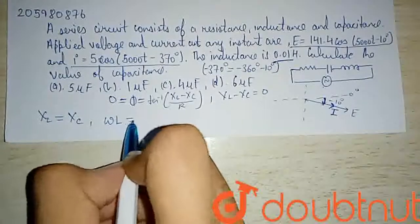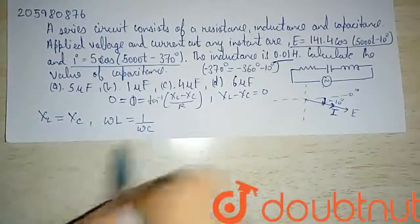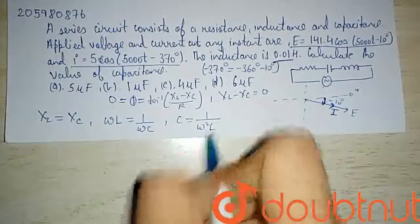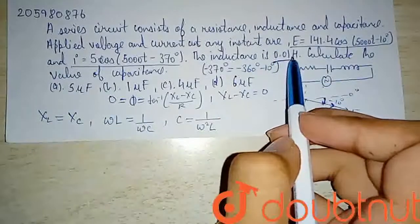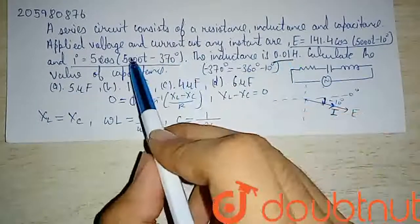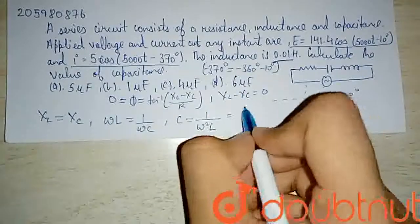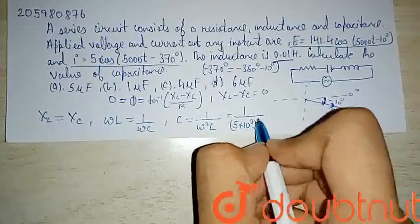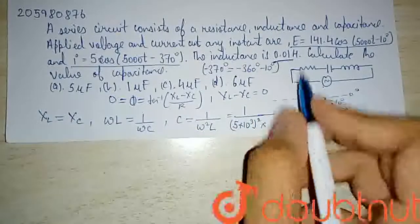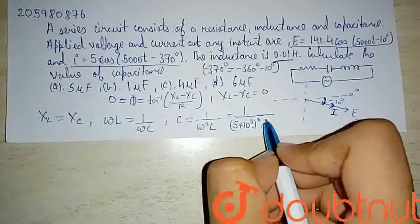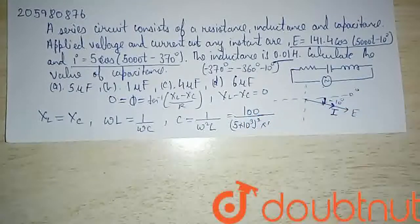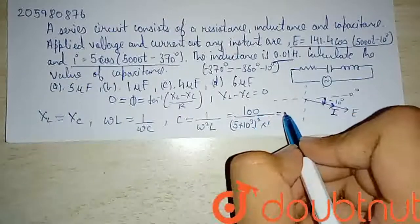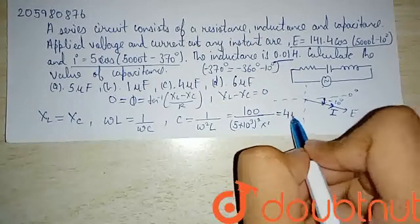XL minus XC by R: omega L minus 1 by omega C equals 0. With omega equal to 100, C equals 1 divided by omega squared L, which is 1 divided by 100 squared times 0.01, giving 100 by 25 times 10^-6.